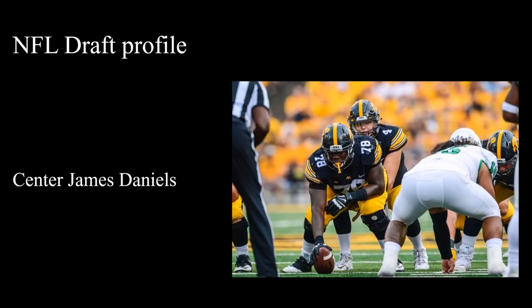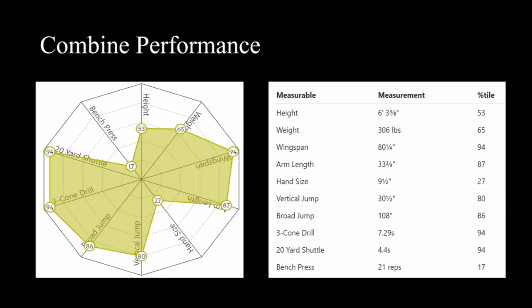First off we are going to take a look at his combine performance. As we can see here, Daniels has a good size for his center, especially in terms of wingspan and arm length. In terms of testing, he was elite in the jumps and the three cone, showing off his explosiveness and his flexibility. Overall, he had a fantastic combine performance.